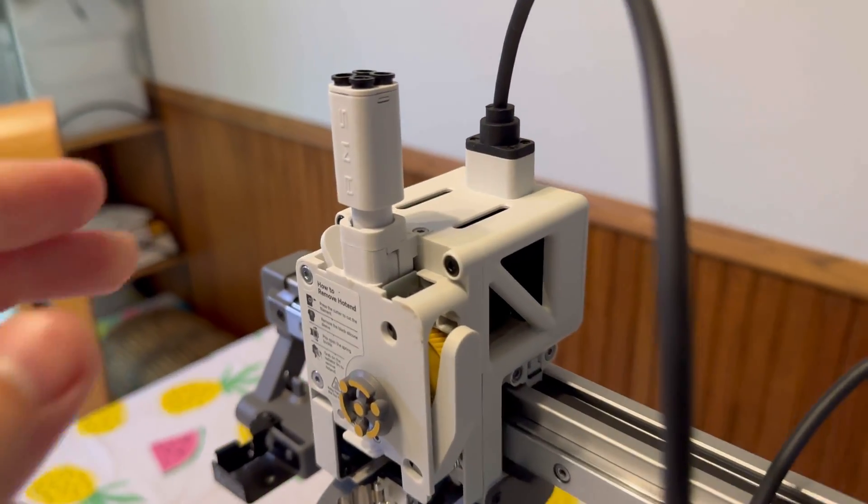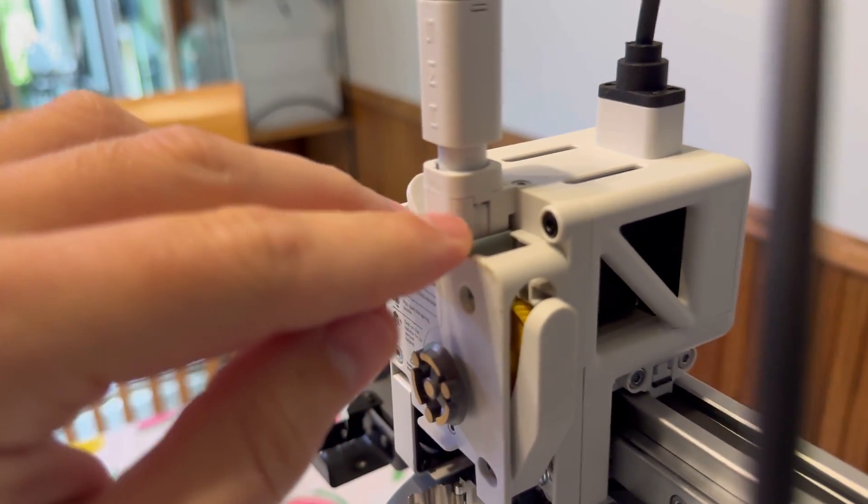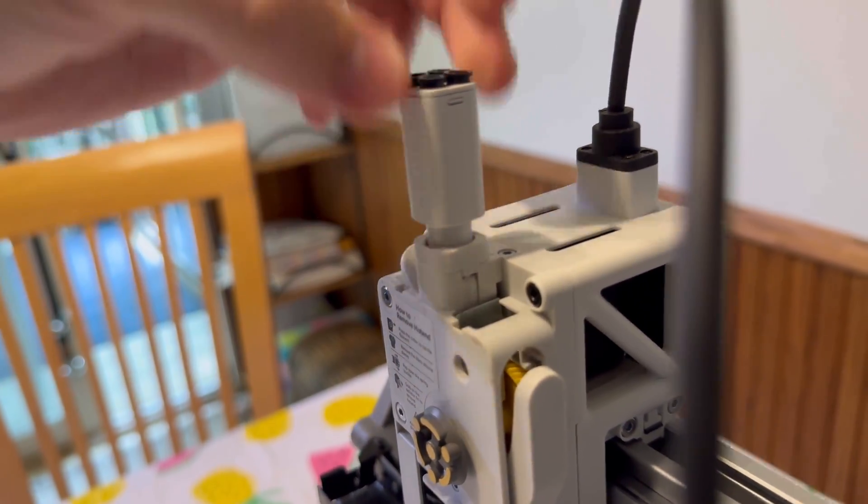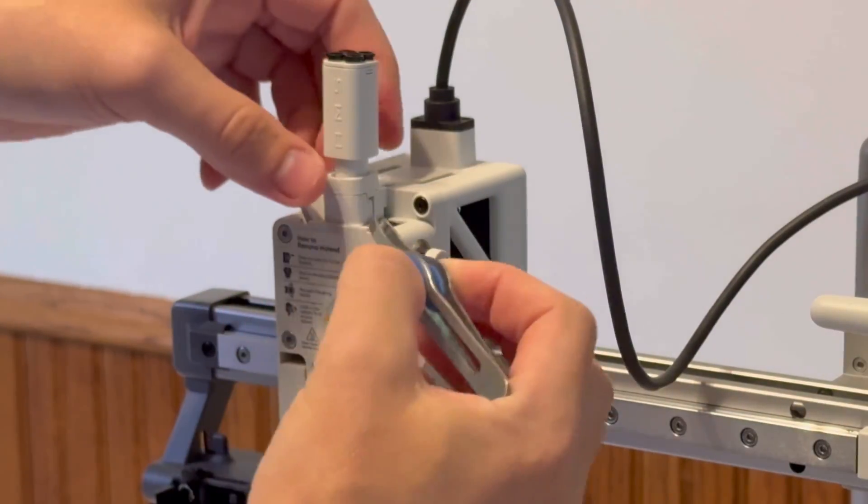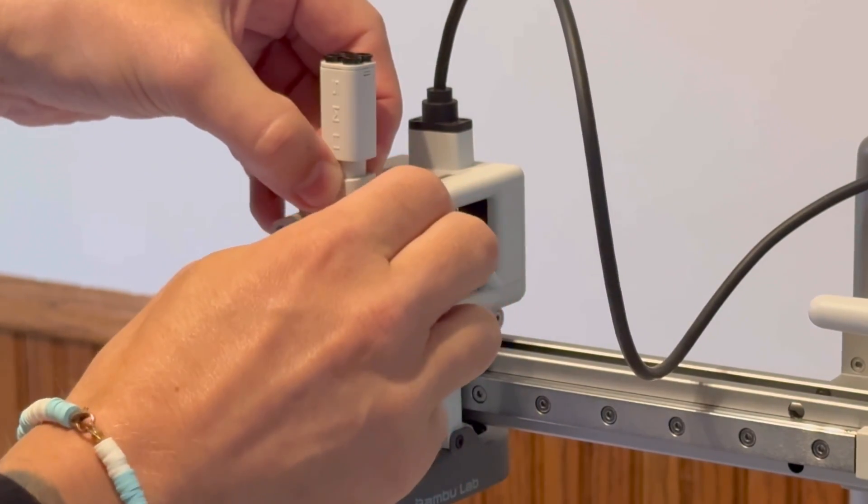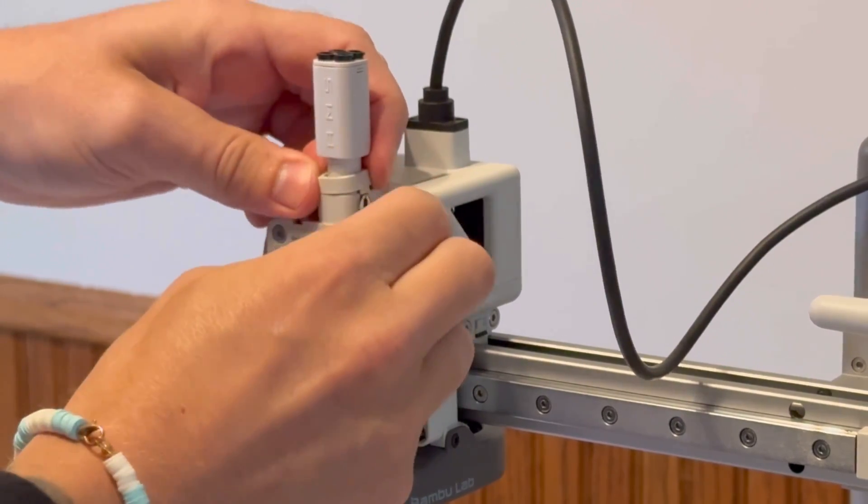All right next what you want to do here is we want to remove this filament chamber. And what we need to do is we need to press this little insert right there and then this should pop right up. So using a tweezers here all we have to do is get the tip of the tweezers here under this tab and then push up on it. It's a little scary you just got to trust yourself.